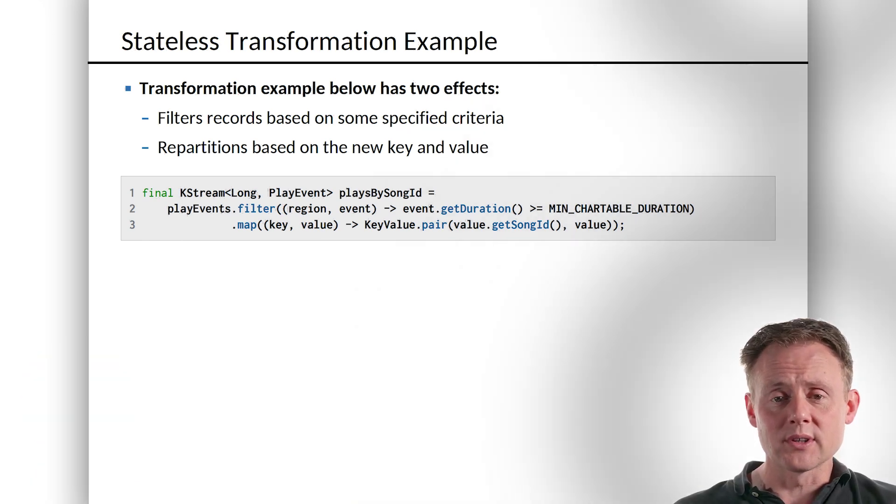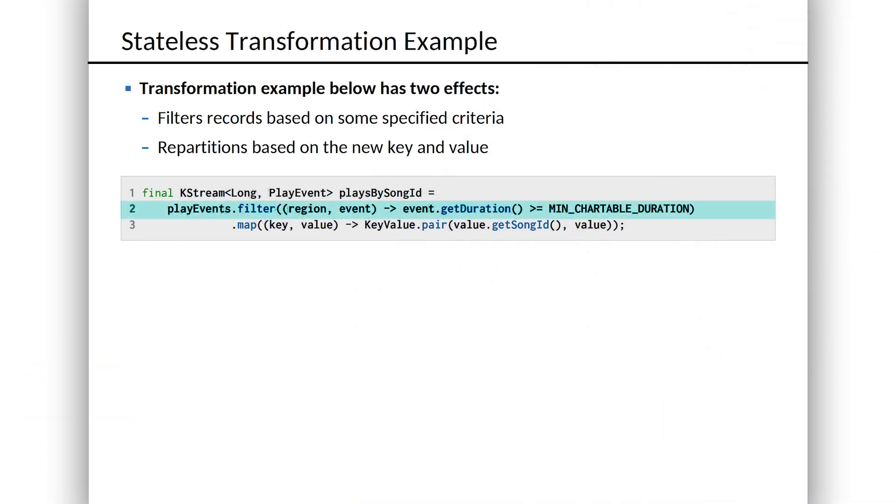Here, as you can see on line two, we're looking into each event and we're saying, get the duration. And if it's greater than or equal to the minimum chartable duration, we'll go ahead and let it pass into the new stream. So super simple there.